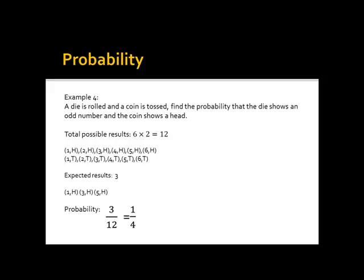Example 4. A die is rolled and a coin is tossed. Find the probability that the die shows an odd number and the coin shows a head. For the total possible results, there are 12. For the die, there are 6 possible ways, and for the coin, there are 2 possible ways, which are the head and the tail. So 6 times 2 is equal to 12.